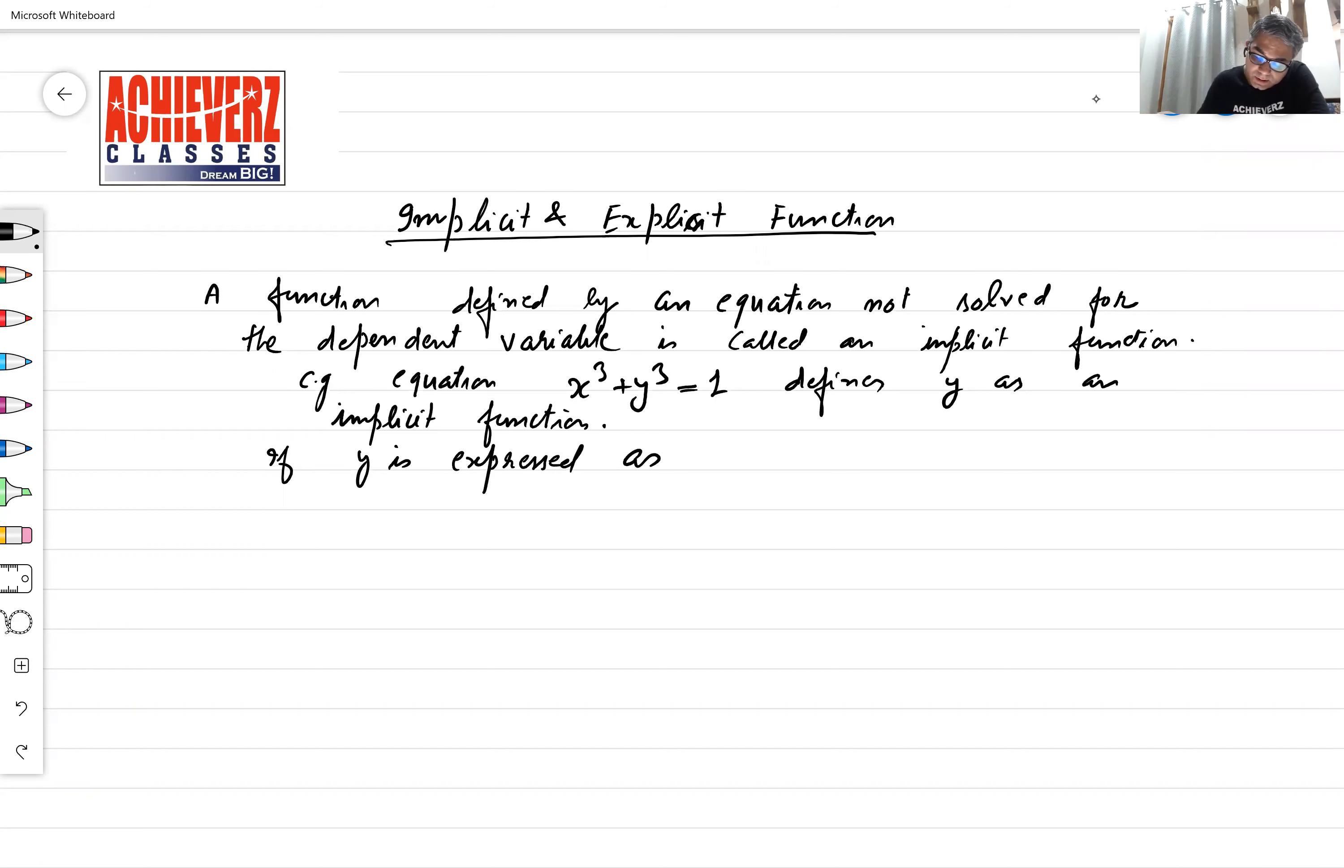A function defined by an equation not solved for the dependent variable is called an implicit function. Meaning you have two variables, generally one is dependent and one is independent variable. See this equation: x³ + y³ = 1.